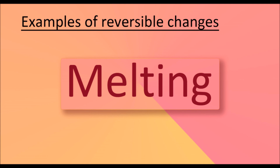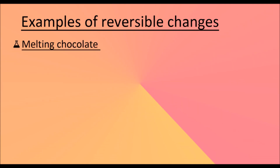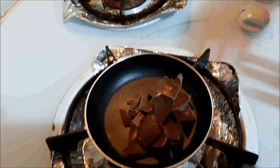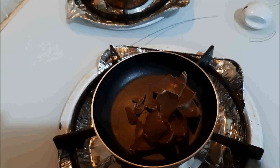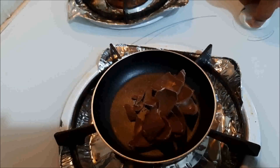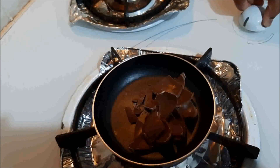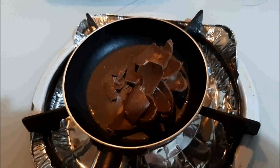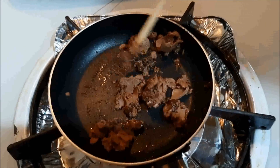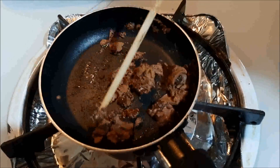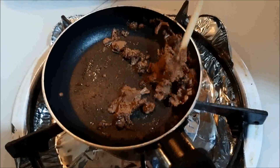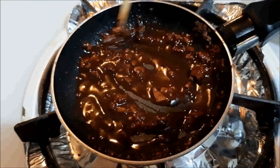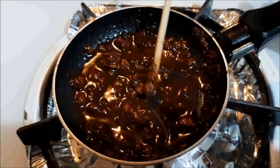Melting — Melting chocolate. Chocolate can be melted by heating. When you freeze melted chocolate, you can make solid chocolate back. It doesn't make a new substance and doesn't change the amount of matter in the chocolate. However, the physical appearance of the chocolate may change.